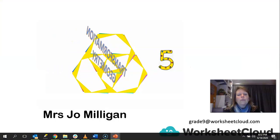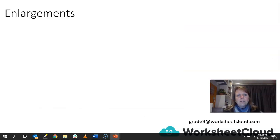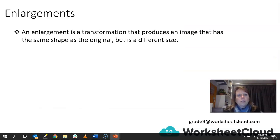We are going to do Transformation Geometry and we are in Lesson 5 in the series. If this is your first time joining us, you can always go back and find Lessons 1 to 4 and watch those as well. But this is a standalone lesson because today what we're going to look at is enlargements. An enlargement is a transformation that produces an image that has the same shape as the original but it is a different size. Remember, when we transform a shape, the result of the transformation is called the image.